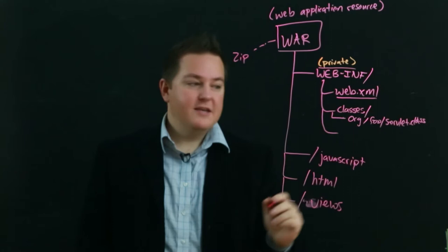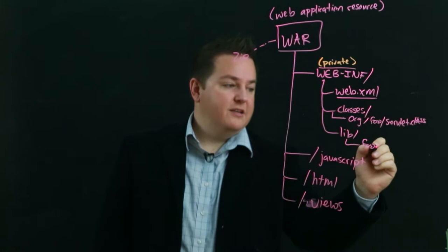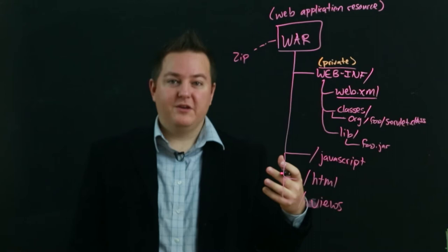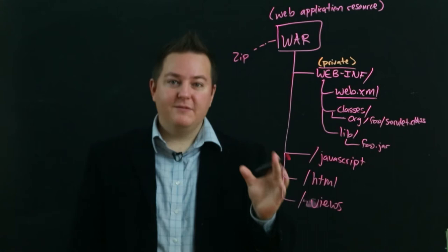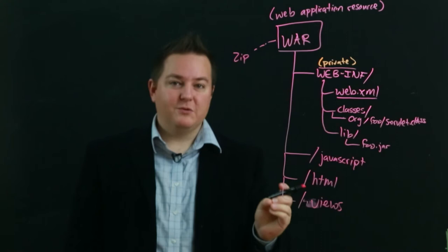The other thing that you'll typically see in web-inf is a lib directory. And lib then will have various jars that your application depends on like foo.jar or whatever else. But you can create any of your own directories as well underneath web-inf that can store custom configuration information or organize things. But the important thing to always remember is if you have something that you don't ever want to be returned to a client, it needs to go in web-inf.